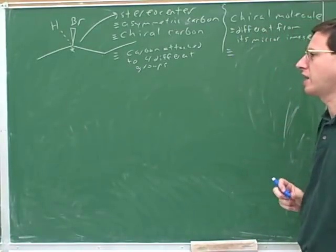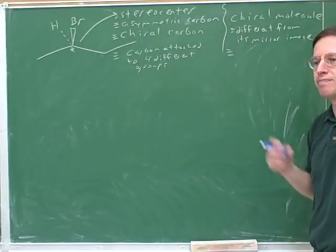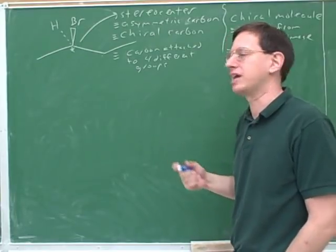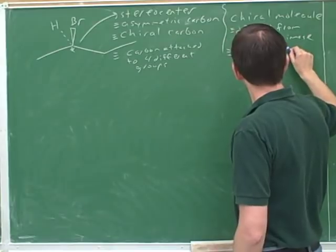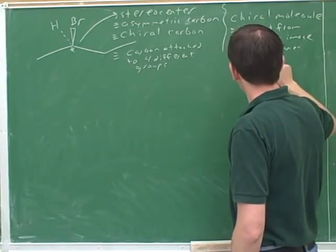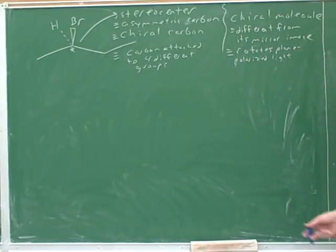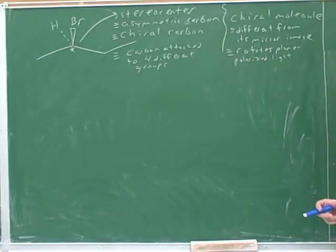Now, another good definition of a chiral molecule. A chiral molecule is a molecule that rotates plane polarized light. That's one of the most interesting things that chiral molecules do. They rotate light. Technically, it has to be plane polarized, but that's a technicality we don't need to get into. The key thing is that a chiral molecule is going to rotate light. So most molecules don't rotate light, but chiral molecules do rotate light.